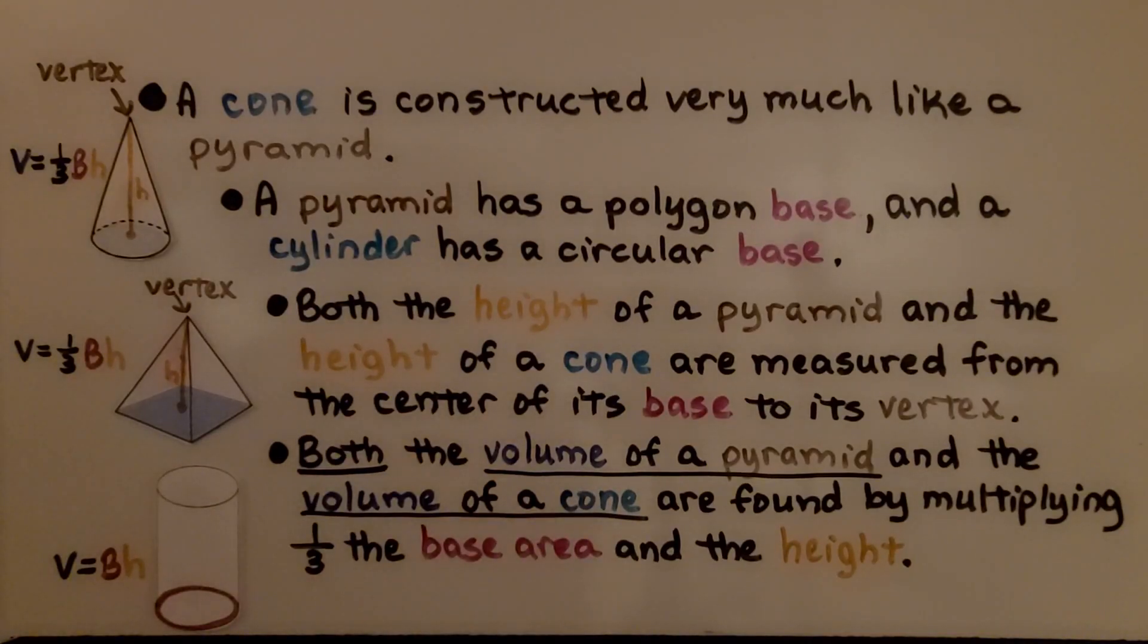A cone is constructed very much like a pyramid. A pyramid has a polygon base and a cylinder has a circular base. Both the height of a pyramid and the height of a cone are measured from the center of its base to its vertex. Both volumes are found by multiplying one-third the base area and the height. Because these come to a peak at their vertex, they don't have all that extra volume.